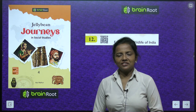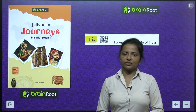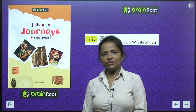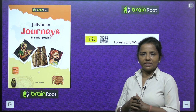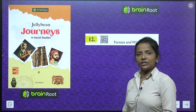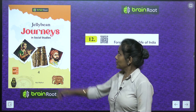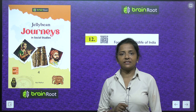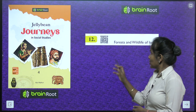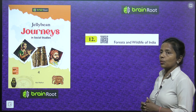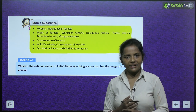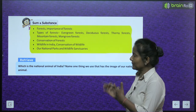Hello dear smart learners, a very warm welcome to your social studies class with your mentor Aparajit. Today we are going to read chapter number 12 of our book Jellybean Journeys in Social Studies class 4th by Brainroot series, and the chapter is Forests and Wildlife of India. Aaj hum India ki forests aur wildlife ke baare mein padhenge.